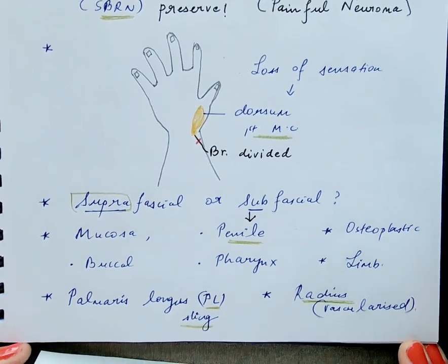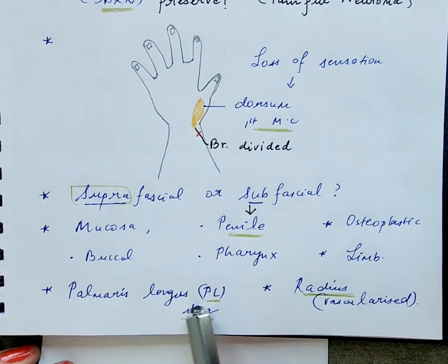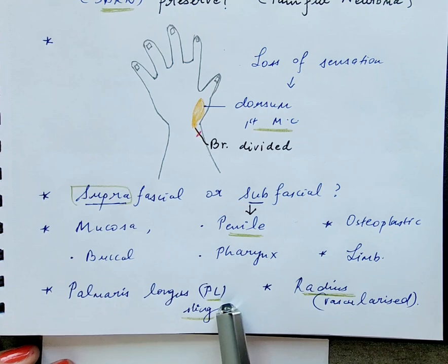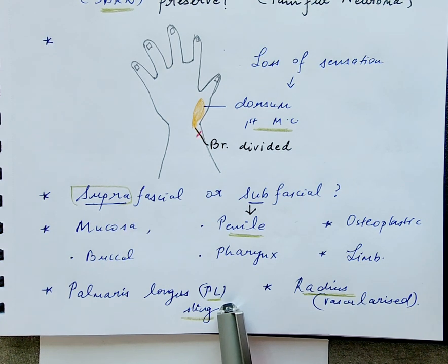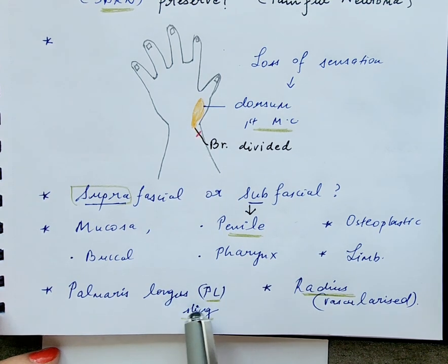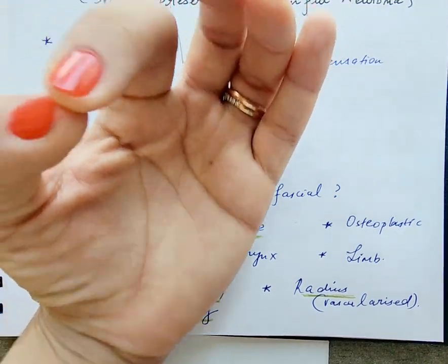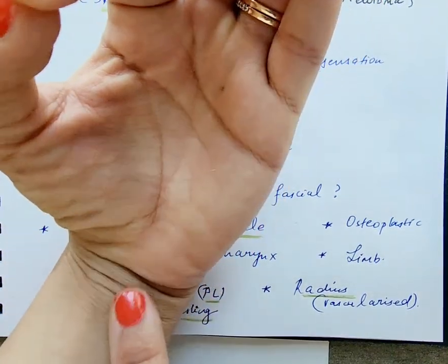For variations of the radial artery forearm flap, a palmaris longus sling can be harvested along with it, which can be used in oral reconstruction to help maintain the integrity of the angle of the mouth — the oral commissure — to prevent drooping and maintain continence.